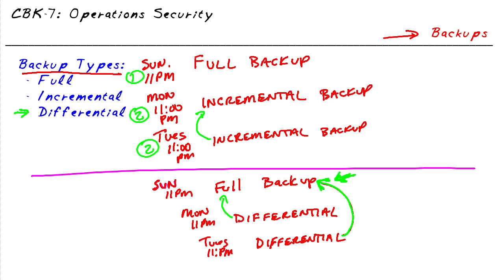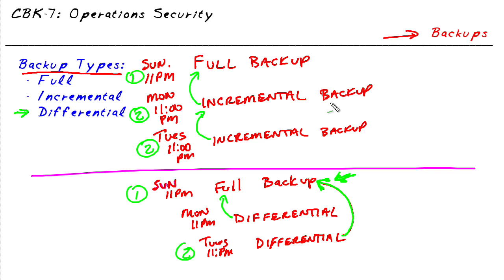Now what's the benefit of this? The benefit is that if we want to restore this data, we would restore the full backup and we would only have to restore the latest differential, because that has all the changes since the last full backup. So as a review: incrementals are only backing up data that's changed since the last backup of any type — Monday's incremental caught everything since the full backup, and Tuesday's incremental captured everything since Monday's backup. Whereas with the differential, the full backup plus the latest differential will have everything since that original full backup.